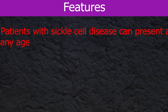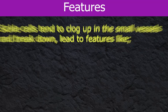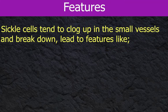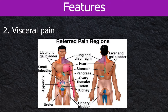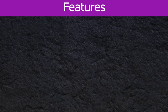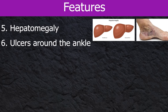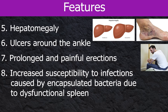Patients with sickle cell disease can present at any age, but they are protected in the first six months of life due to the presence of fetal hemoglobin, which is an efficient oxygen transporter. After that, sickle cells tend to clump in the small vessels and break down, leading to features like pain in the bones, visceral pain, damage to organs like the brain and heart, jaundice, gallstones, hepatomegaly, ulcers around the ankle, prolonged and painful erections, and increased susceptibility to infections caused by encapsulated bacteria due to a dysfunctional spleen.